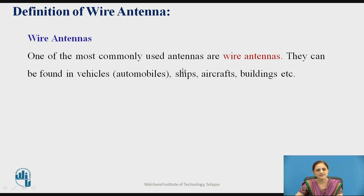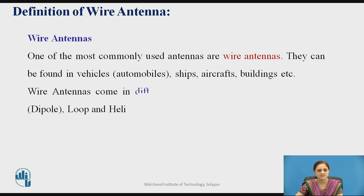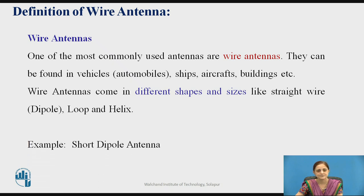Wire antennas are one of the most commonly used antennas. They can be found in vehicles, ships, aircrafts, buildings, etc. Wire antennas come in different shapes and sizes such as the straight wire, also known as the dipole, loop, and helix. Examples of wire antennas are the short dipole antenna and half wave dipole antenna, which we will cover in this session.